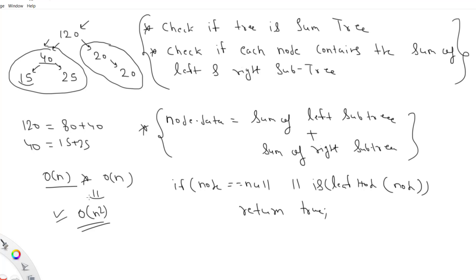To improve the complexity, instead of going top-down we go bottom-up. We solve the problem in post-order: first visit the left subtree, then the right subtree, then process the current node. Starting from a leaf node, we return true.